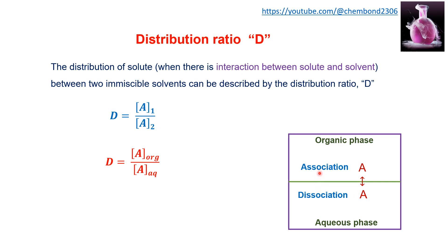The distribution ratio is the total concentration or total activity of A in the organic phase divided by the total concentration of A in the aqueous phase. It equals A present in phase one divided by A present in phase two — or, in solvent extraction terms, A in organic phase divided by A in aqueous phase. This uses the total amount of A whether it is in ion form, ionized form, or association form.